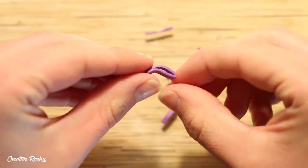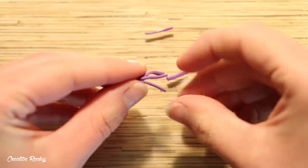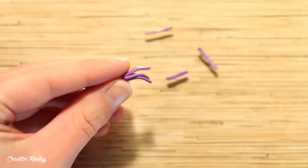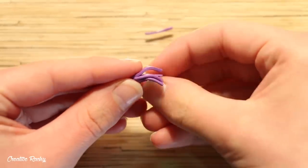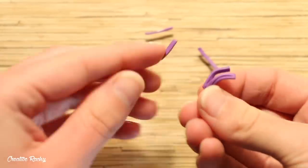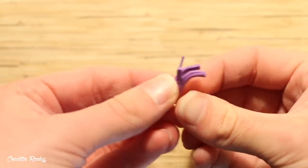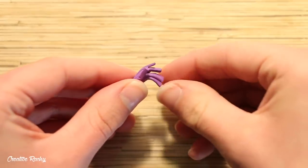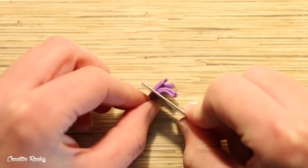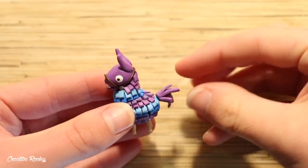To make the tail, I took some longer strips of the original purple color and bunched them together at one point. I then trimmed off that point and attached the tail onto the body.